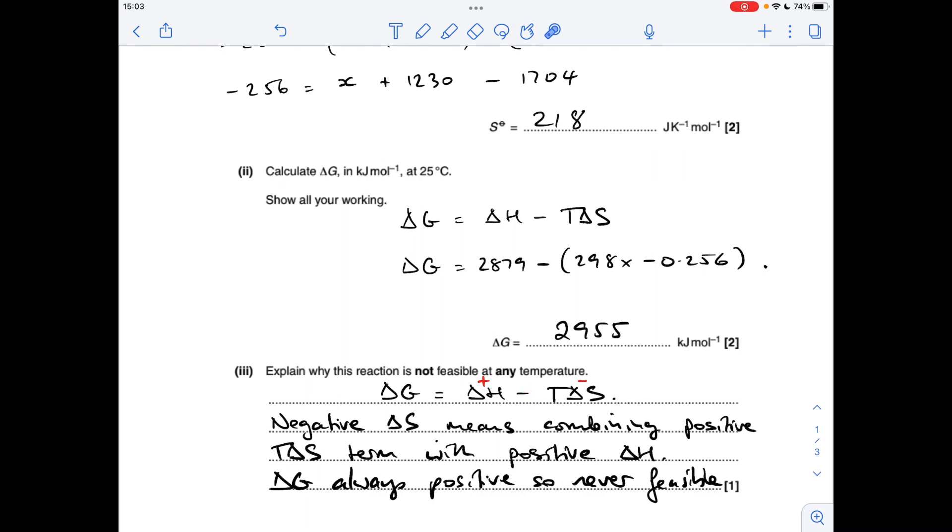So you can see this double negative here is going to make the T delta S term positive. So essentially, you're combining two positive numbers. The delta H is positive, the T delta S term becomes positive because of that double negative. And so therefore, delta G will always be positive, and therefore it's never feasible.